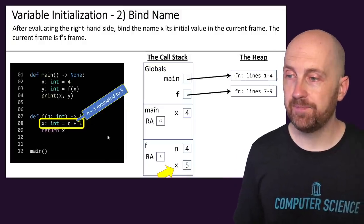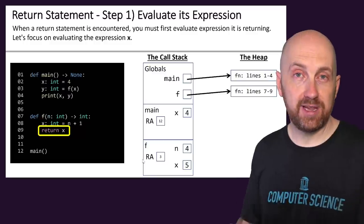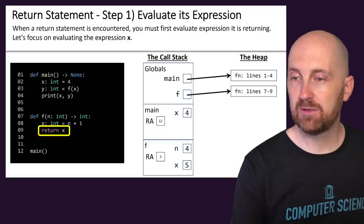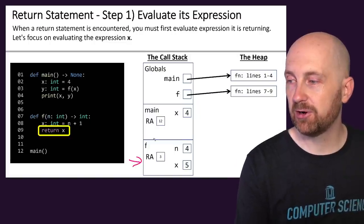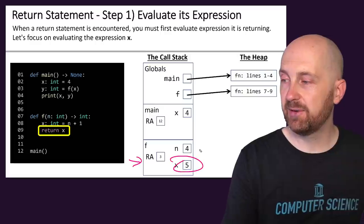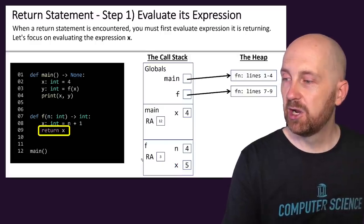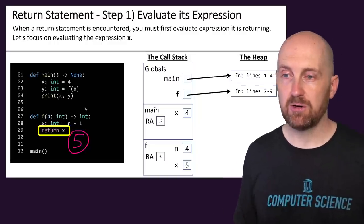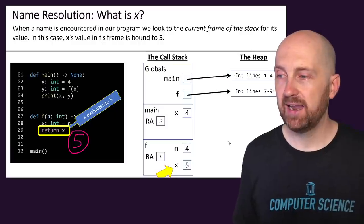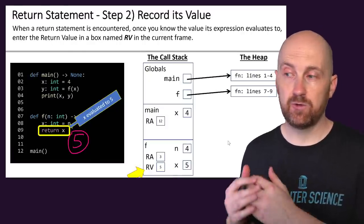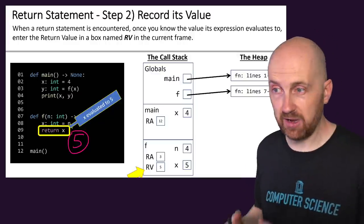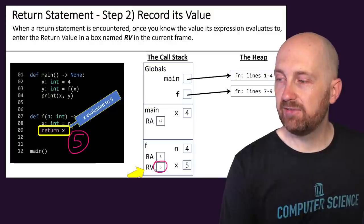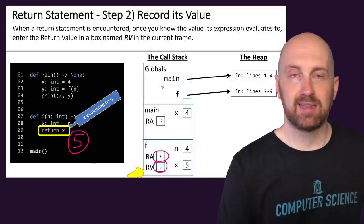On the next line, we hit the return statement, which is returning whatever x evaluates to. We look up x in our current frame on the stack — sure enough, we have an x variable whose value is 5. So we're saying: return 5. When we reach a return statement, we add a return value entry to that frame so we know its job is complete — there's nothing else for this function to do. Five is the value we're returning to line 3.